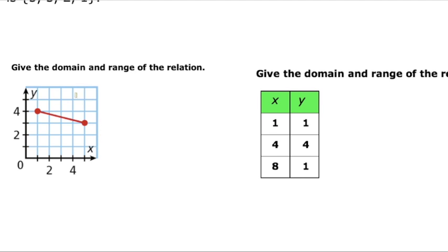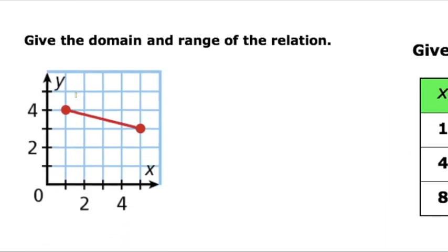Looking at a graph example, we want to identify the domain and range. Your domain is your x values, so we care about which x values are used. One way to find this is to drop a line straight down from the starting point and the ending point. Whatever that span covers is going to be our domain. We can see that any point on this line between one and five is in our domain, because those are our x value points. Remember, a line has an infinite number of points on it.